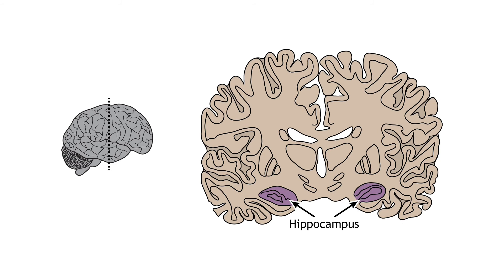Just posterior to the amygdala lies the hippocampus. The hippocampus, which means seahorse due to the similarity between its shape and the animal, is important in the long-term consolidation of memories, spatial navigation, and associating contextual cues with events and memories.